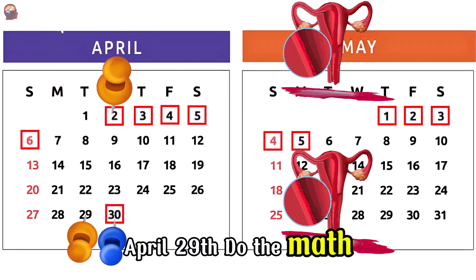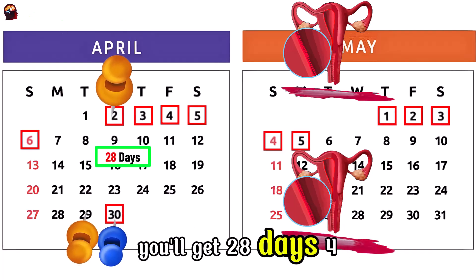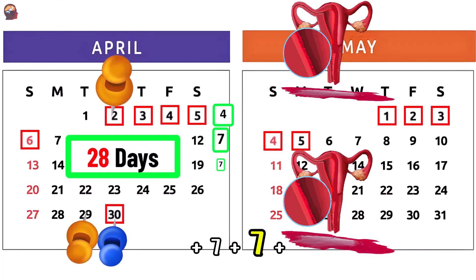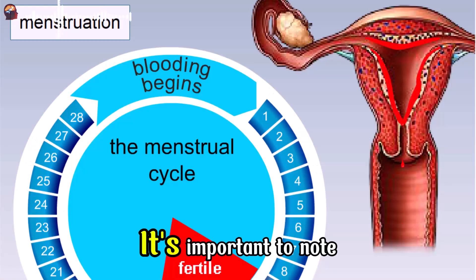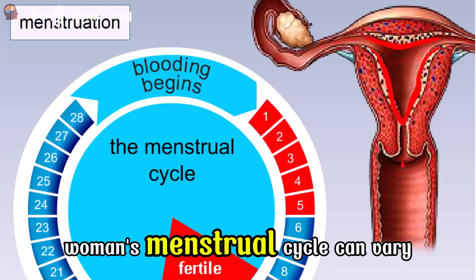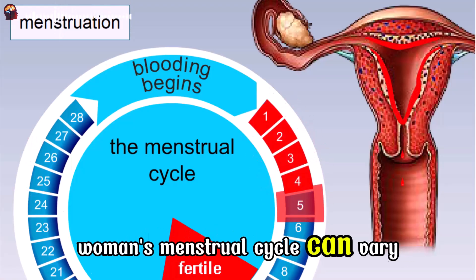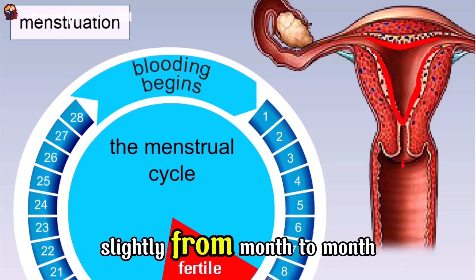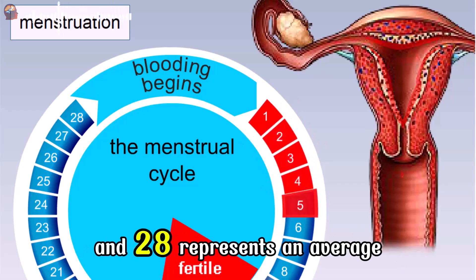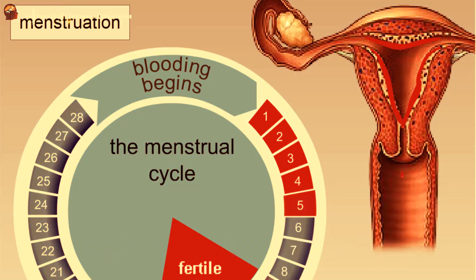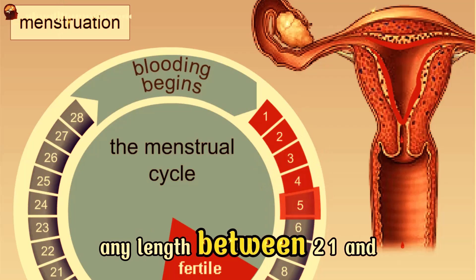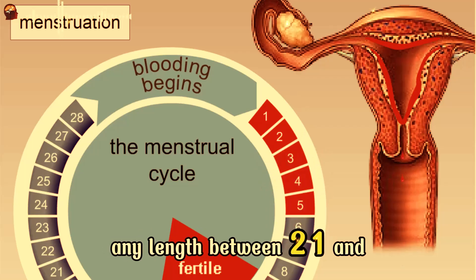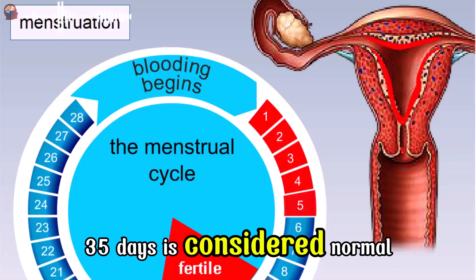Do the math — you'll get 28 days: 4 plus 7 plus 7 plus 7 plus 3 equals 28. It's important to note that the length of a woman's menstrual cycle can vary slightly from month to month, and 28 represents an average. Furthermore, any length between 21 and 35 days is considered normal.